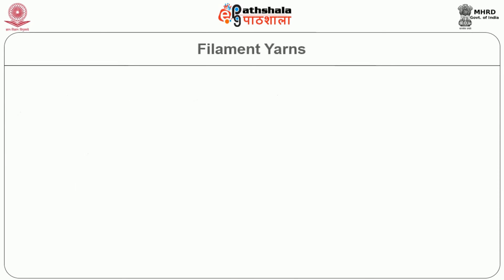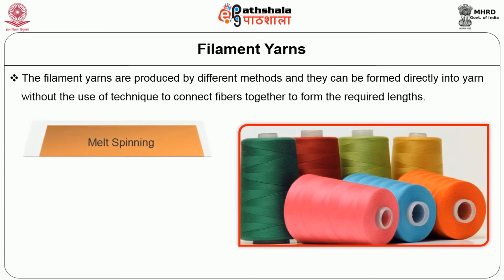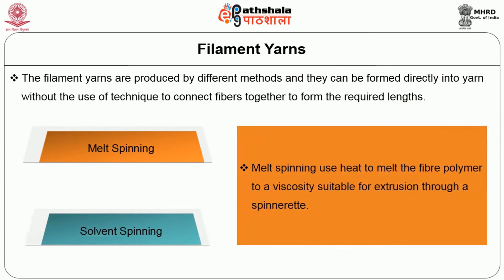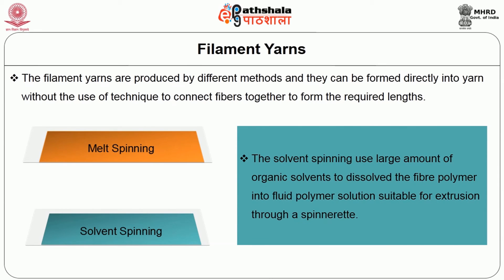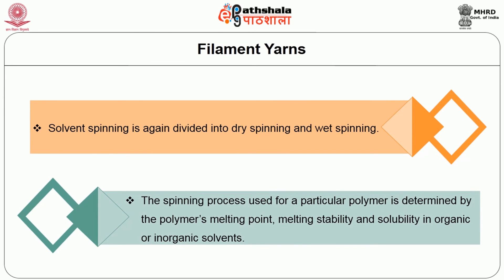Coming to the filament yarns — filament yarns are produced by different methods and can be formed directly into a yarn without techniques to connect fibers together to form the required length. They are produced by two methods: melt spinning and solvent spinning. Melt spinning uses heat to melt the fiber polymer to a viscosity suitable for extrusion through a spinneret. Solvent spinning uses large amounts of organic solvent to dissolve the fiber polymer into a fluid polymer suitable for extrusion through a spinneret. Solvent spinning is again divided into dry spinning and wet spinning. The spinning process used for a particular polymer is determined by the polymer's melting point, melting stability and solubility in organic or inorganic solvents.